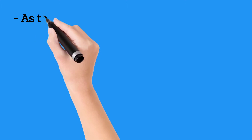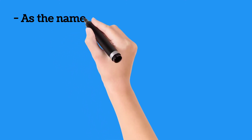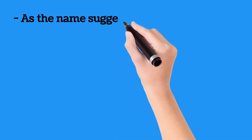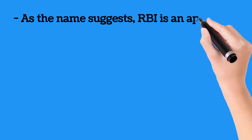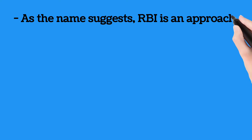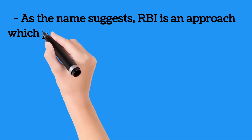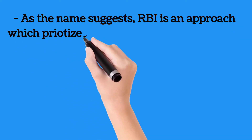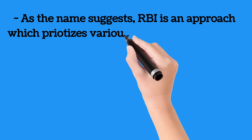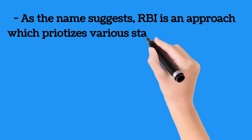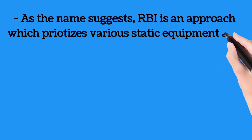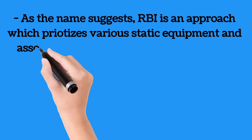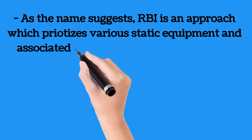As the name suggests, risk based inspection is an approach which prioritizes risk. It is associated with various static equipment and associated piping systems for inspections based on anticipated or associated risks. Assets with higher risks are given inspection based priority, whereas low risk items are given less priority in terms of inspection frequency.